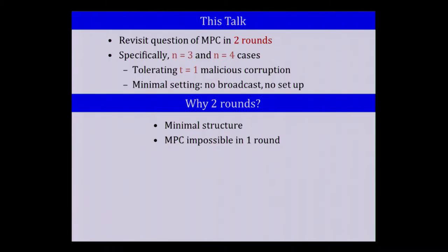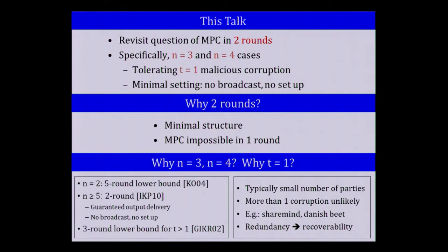MPC in general is impossible in one round, so the more tricky question is why n equals three and n equals four with t equals one. From a theoretical and academic point of view, the remaining cases have already been solved. For n equals two, there is a five-round lower bound. For n greater than or equal to five, we know two-round protocols with guaranteed output delivery in the minimal setting. And for t greater than one, there is a three-round lower bound.